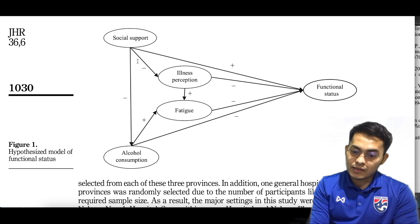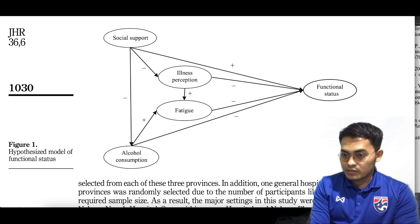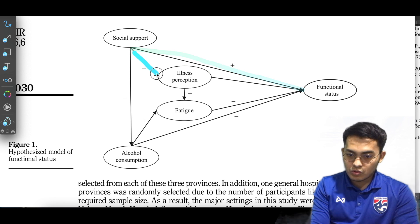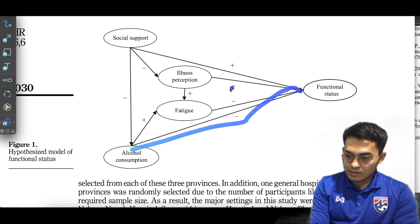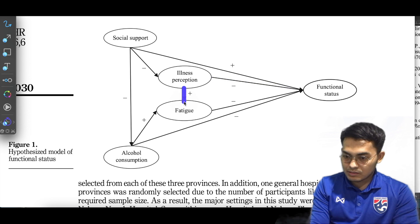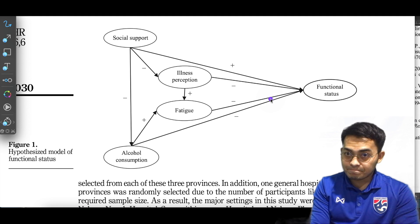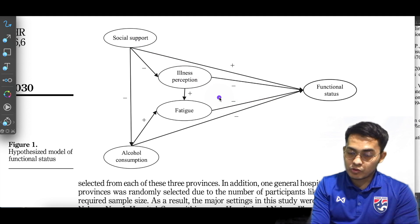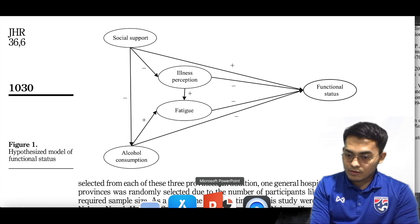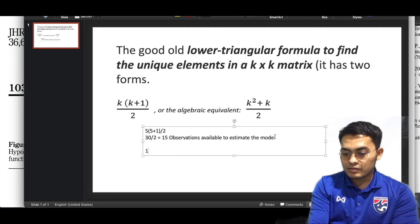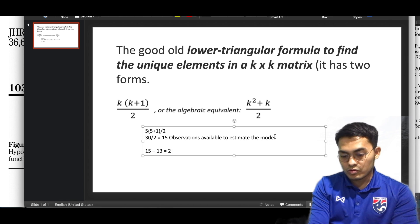Here are the paths that my colleague already identified based on the theoretical model. We can count them: social support, functional status — one, two, three, four, five, six, seven, eight. So we have eight paths here. Eight paths plus five variables equals 13 parameters. To calculate the degree of freedom: 15 minus 13 equals 2 degrees of freedom.